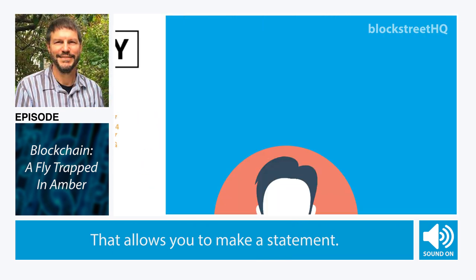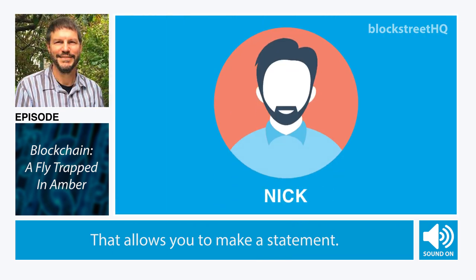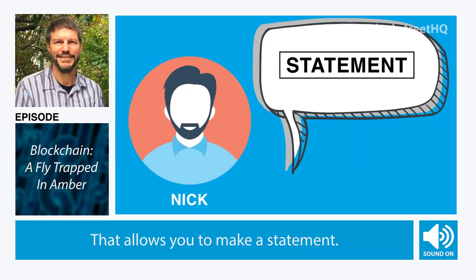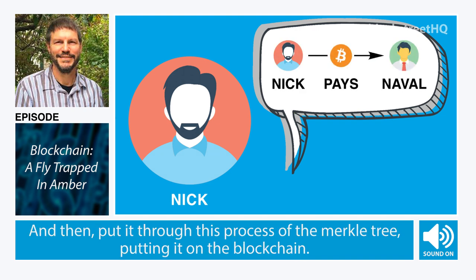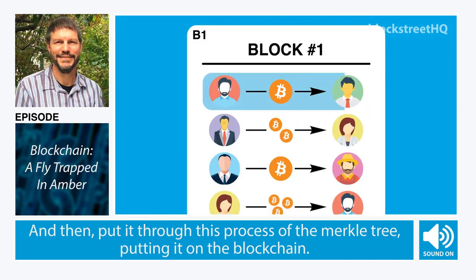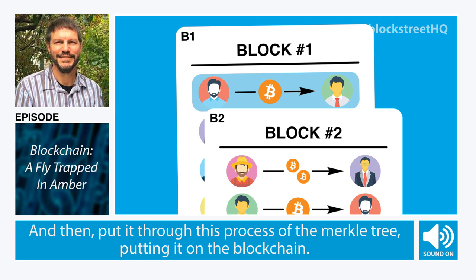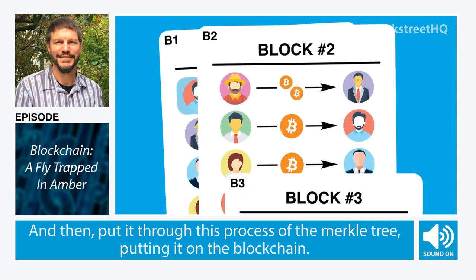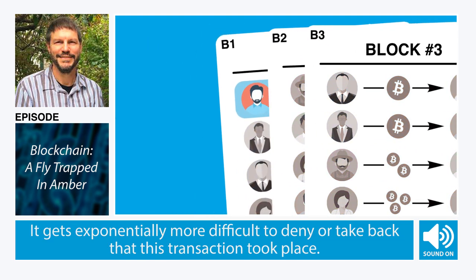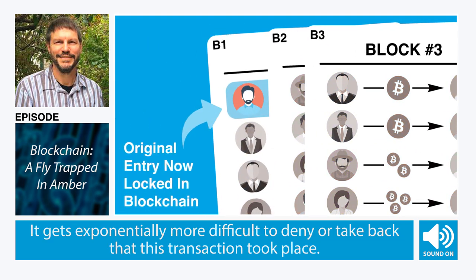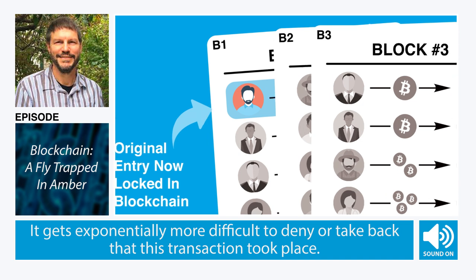That allows you to make a statement — I'm paying such and such amount of Bitcoin to somebody else — and then put it through this process of the Merkle tree, putting it on the blockchain. It gets exponentially more difficult to deny or take back that this transaction took place.